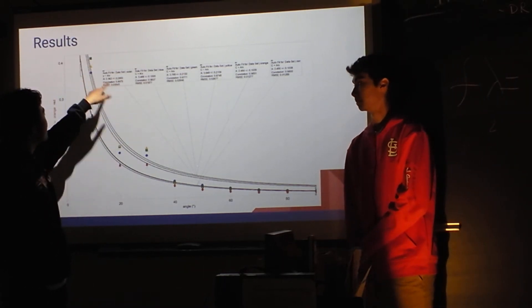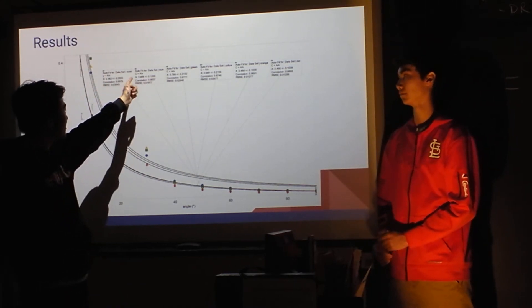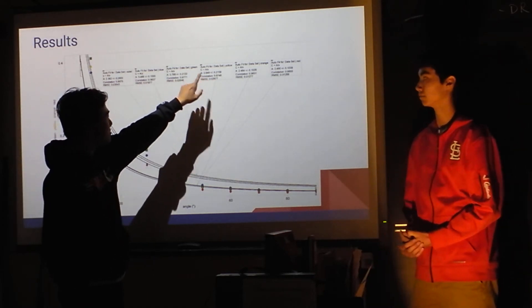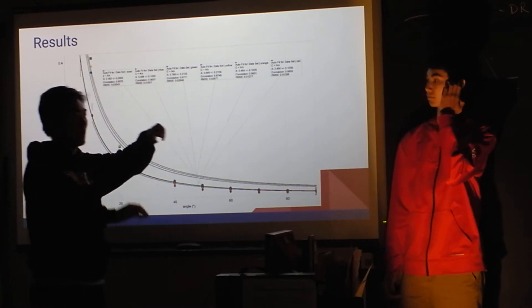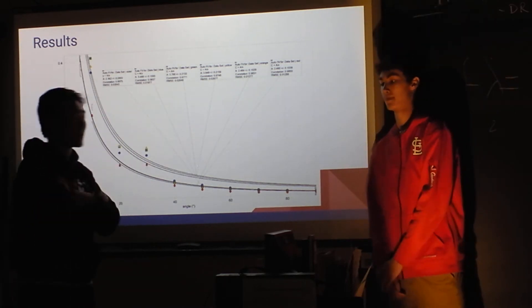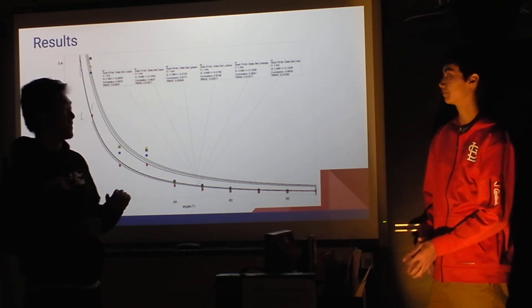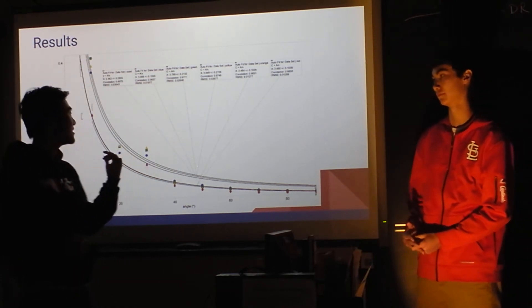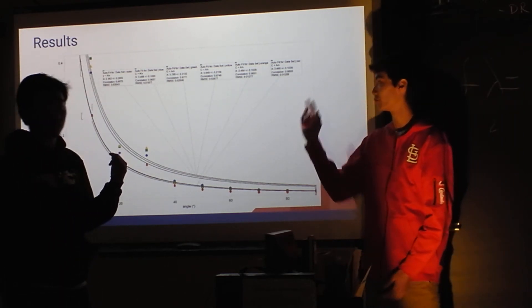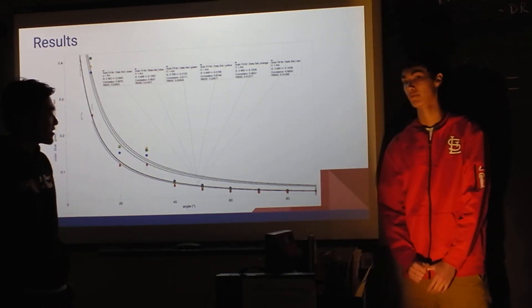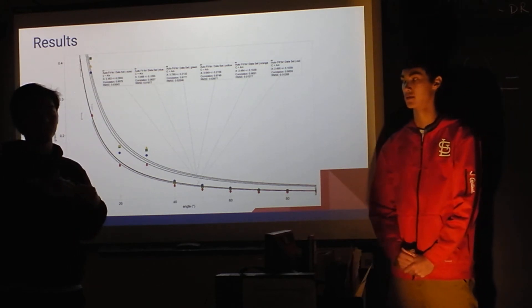So for violet, we have the coefficient, the a is 2.3. And for blue is 3.4, for green is 3.7, and yellow is 3.6, orange 2.4, and red 2.49. So from these six numbers, you can tell that blue, green, and yellow has a slight higher coefficient, and violet, orange, and red has a lower coefficient. So maybe when they shift, or when they tilt the angle, they shift in different styles. Different styles means different coefficients.